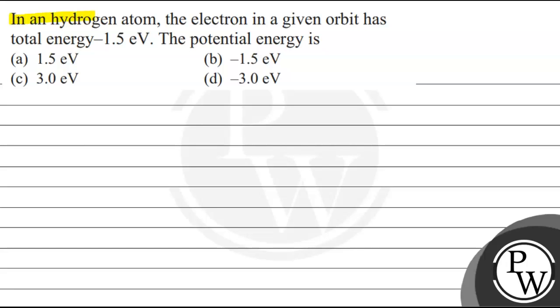Hello, let's see the question. In a hydrogen atom, the electron in a given orbit has total energy of minus 1.5 electron volts. The potential energy is: option A, 1.5 electron volts; option B, minus 1.5 electron volts; option C, 3.0 electron volts; option D, minus 3.0 electron volts.